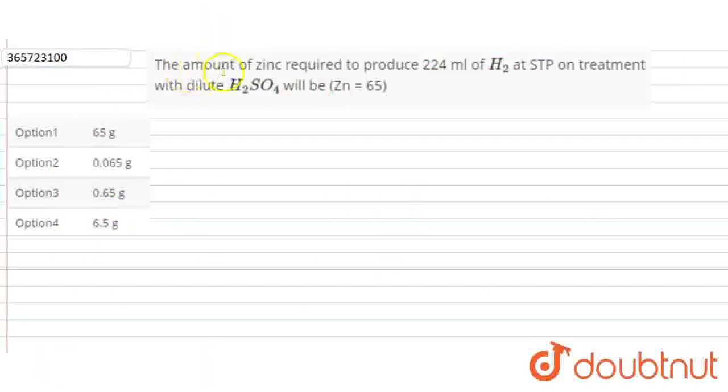Hello everyone, this question is: the amount of zinc required to produce 224 ml of H2 at STP (standard temperature pressure) on treatment with dilute H2SO4, given zinc atomic mass is 65.